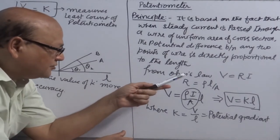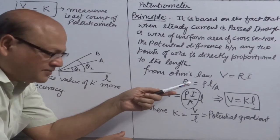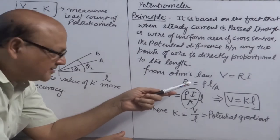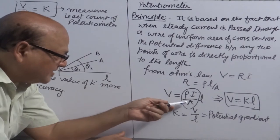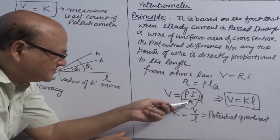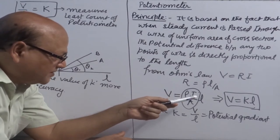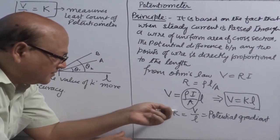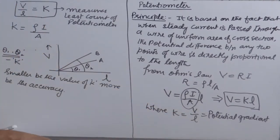From Ohm's law, we know V is equal to RI. R is equal to rho L over A. Put this value. Now, rho I and A is kept constant. So I put it as K. So V is equal to KL. Where K is equal to V over L. And this is called potential gradient.